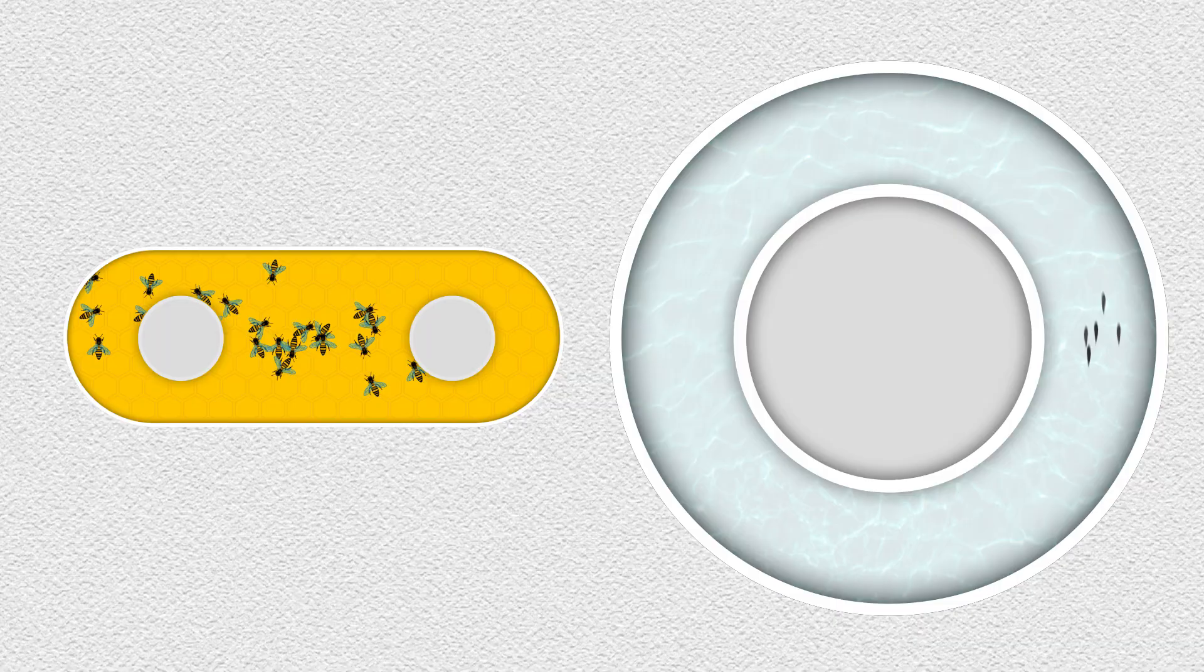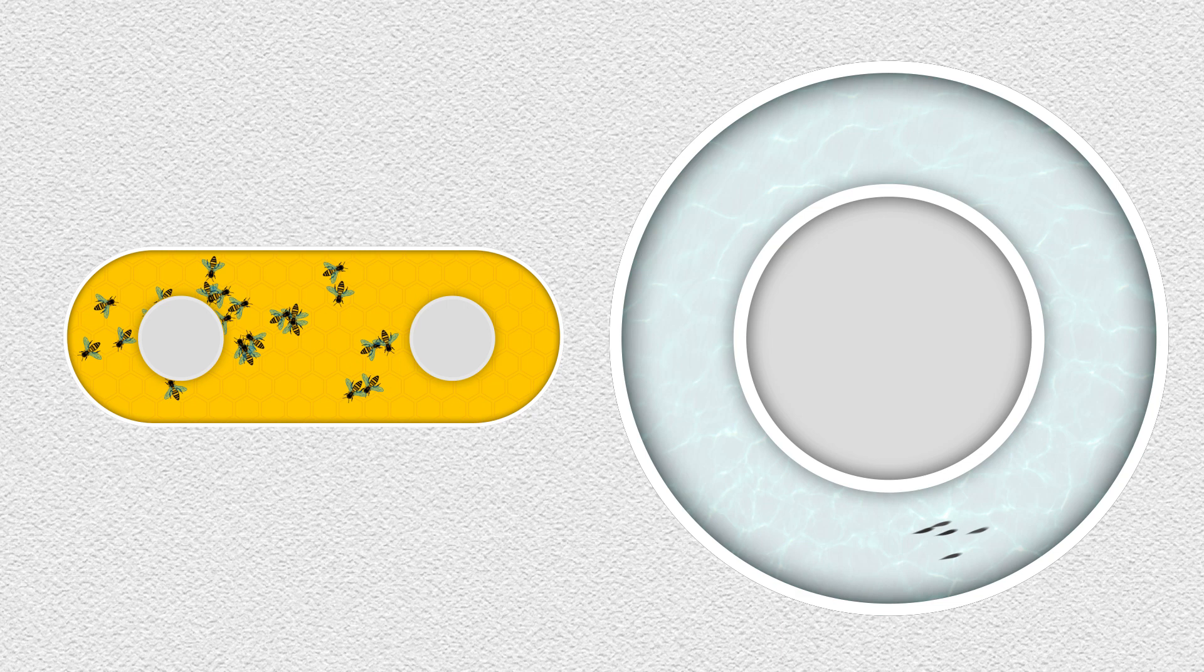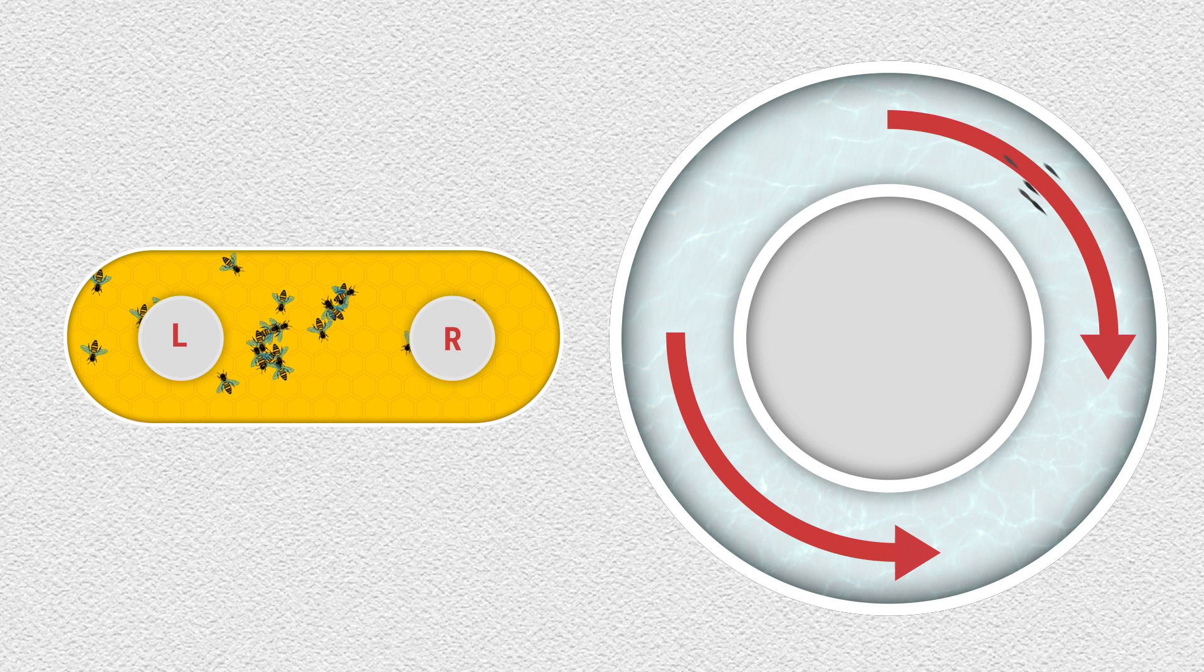In each setup, the fish and bees have a binary collective choice to make. The bees can choose to congregate around one of two robots, and the fish can swim either clockwise or counterclockwise around the circle.